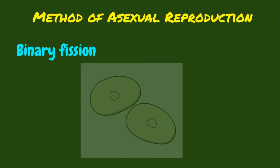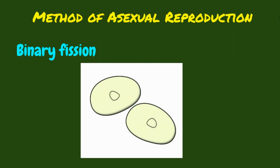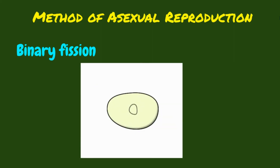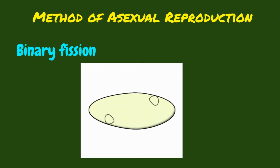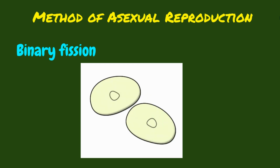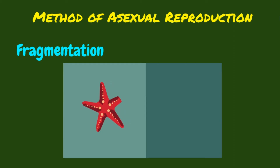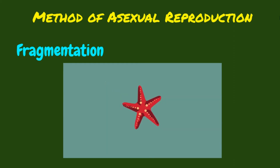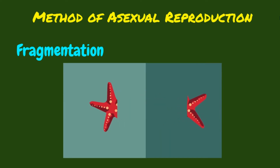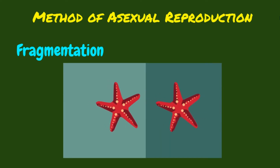Binary fission occurs when a parent cell splits into two identical daughter cells of the same size. Fragmentation occurs when a parent organism breaks into fragments or pieces, and each fragment develops into a new organism. For example, starfish reproduce this way — new starfish can develop from a single ray or arm.